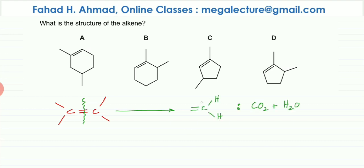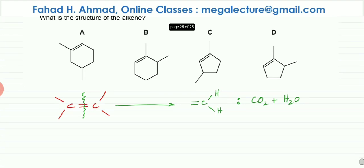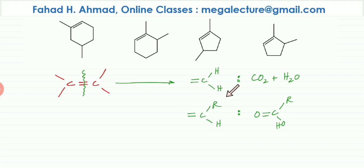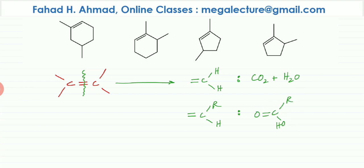Scenario one: if a double-bond carbon is bonded to two hydrogens, it changes into CO₂ and water. Scenario two: if a double-bond carbon is bonded on one side to a carbon chain and on the other side to a hydrogen, that carbon changes into a carboxylic acid — double bond O and OH — while the rest of the molecule stays the same.